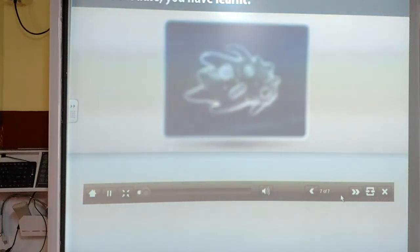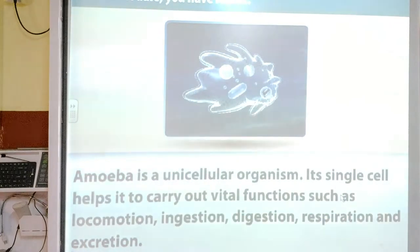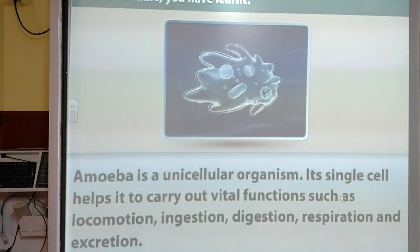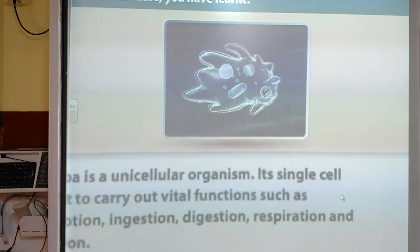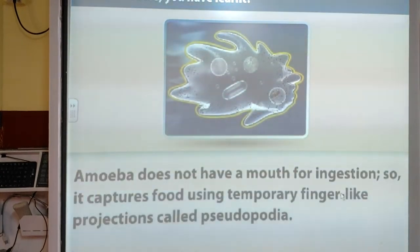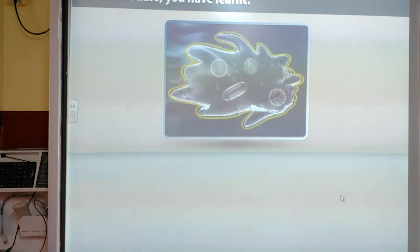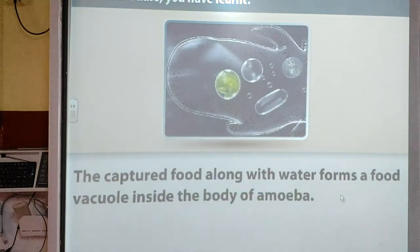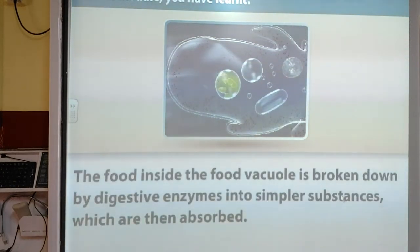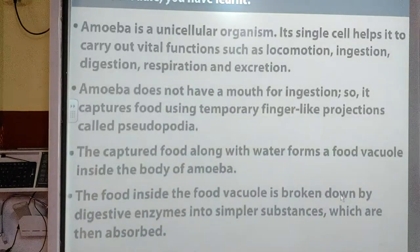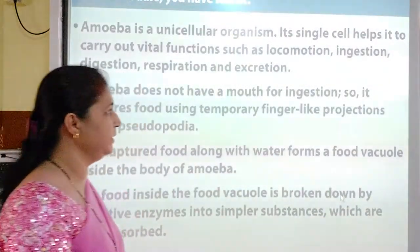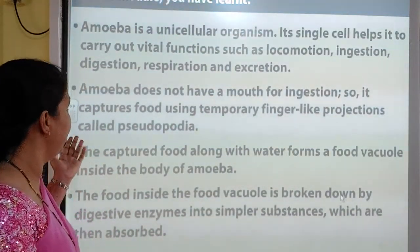In this module you have learnt: amoeba is a unicellular organism. Its single cell helps it carry out vital functions such as locomotion, ingestion, digestion, respiration and excretion. Amoeba does not have a mouth, so it captures food using temporary finger-like projections called pseudopodia. The captured food along with water forms a food vacuole inside the body of amoeba, and the food inside the vacuole is broken down by digestive enzymes into simpler substances which are then absorbed. We have studied digestion in grass-eating animals and ingestion and digestion in amoeba.